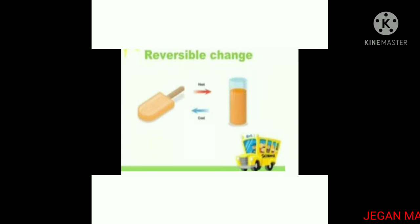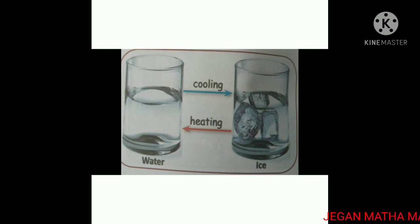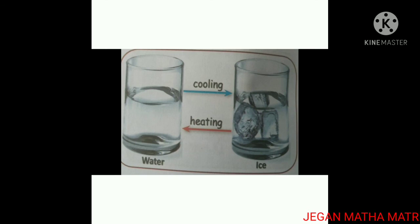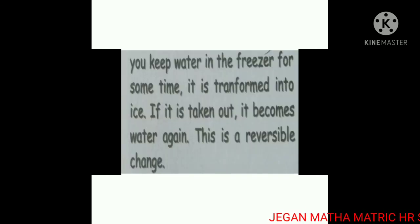Another example of reversible change: if you keep water in the freezer for some time, it is transformed into ice. If it is taken out, it becomes water again. So a substance can turn back to its original state. This is called a reversible change.